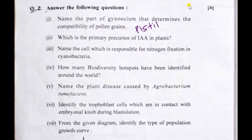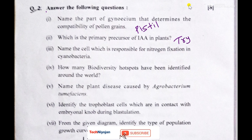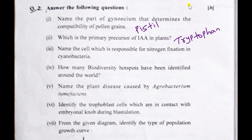The second question: which is the primary precursor of IAA in plants? Its answer is tryptophan. The third question: name the cell responsible for nitrogen fixation in cyanobacterium. Its answer is heterocyst.